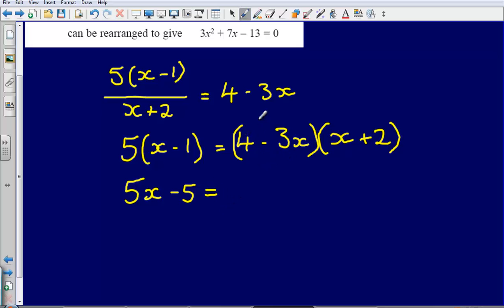These look a little trickier. 4 times x gives you 4x. Negative 3x multiplied by 2, that's going to give you negative 6x.